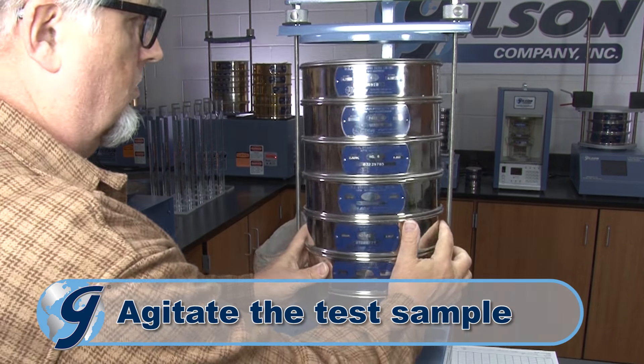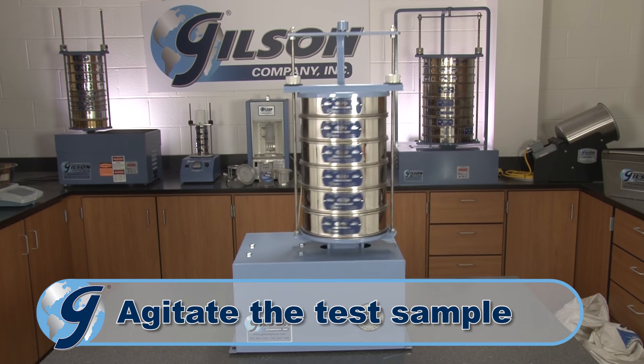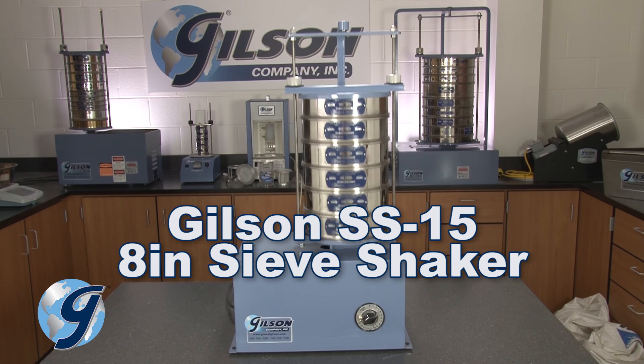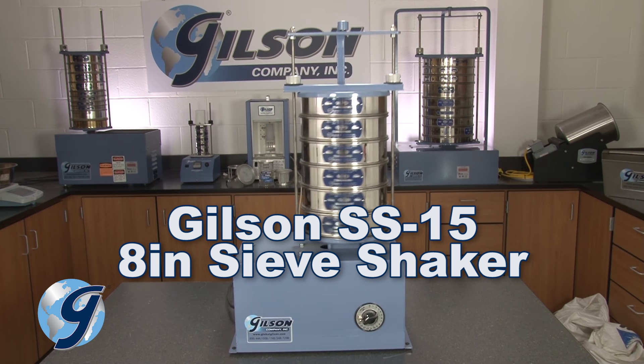Place the test sample onto the top sieve and then cap the sieve stack with a sieve cover. Agitate the sieves by means of a mechanical sieving apparatus for a sufficient period of time so that not more than 1% by mass of the material retained on any individual sieve will pass that sieve during one minute. For this demonstration, we are using the Gilson SS-15 mechanical sieve shaker, which delivers superior accuracy and repeatability for particle separations by combining a back and forth lateral motion with an up and down and tilting motion, causing test material to travel in an orbital direction on the sieve surface.